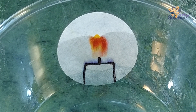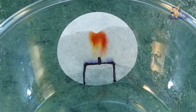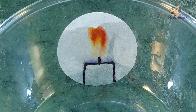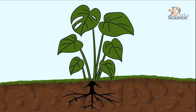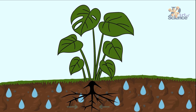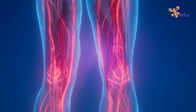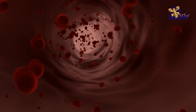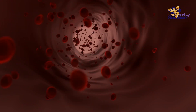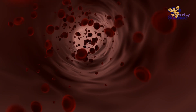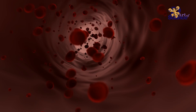Do you know why capillary action is important? It is the process of capillary action that helps the roots of plants to absorb water from the soil and transfer it upwards against gravity through tubes to every part of the plant. And not only plants, but even in the human body, all the important nutrients reach all parts of a body through water and blood, which moves by the process of capillary action.